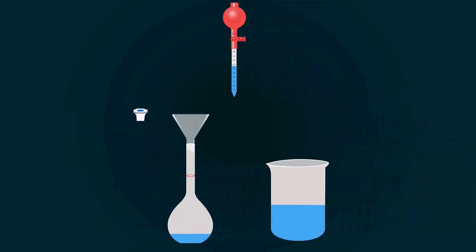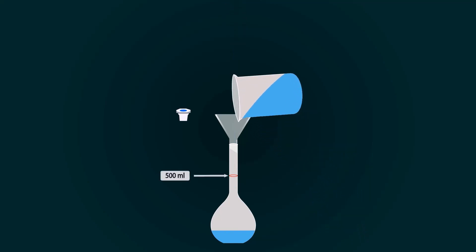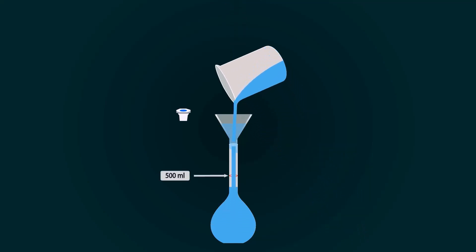Now pour this into the volumetric flask. Now add distilled water up to the 500 ml mark.